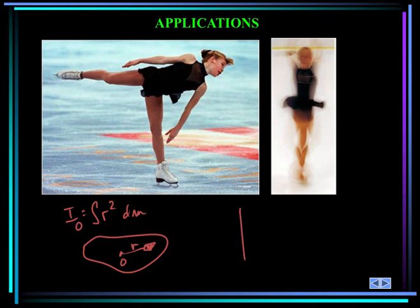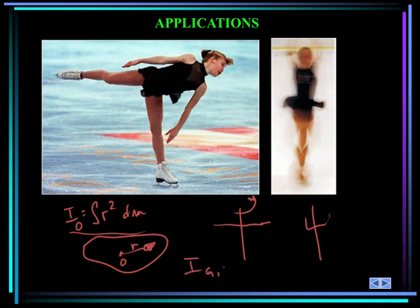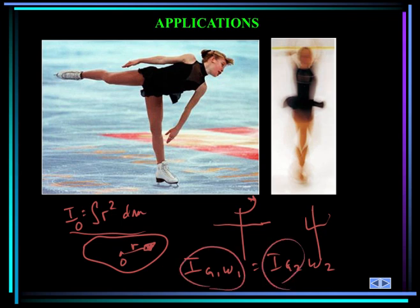Initially, the skater's arms are outstretched and she's spinning around an axis. In the second position, she brings her arms in, bringing some mass closer to the center of her body. When she does that, the moment of inertia goes down. If momentum is conserved, the moment of inertia at state 1 times omega 1 equals the moment of inertia at state 2 times omega 2. If the moment of inertia goes down and angular momentum stays constant, then omega 2 must go up.